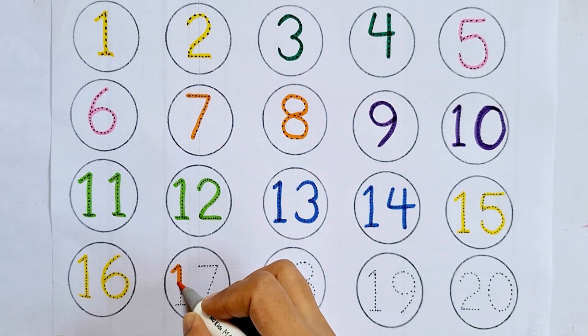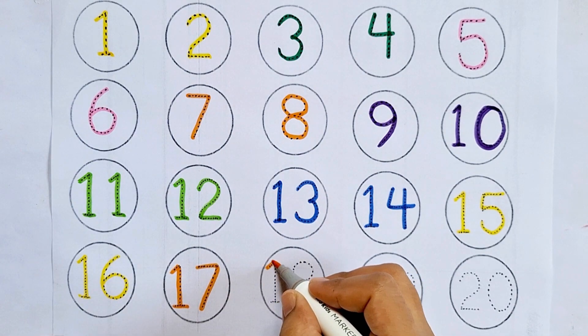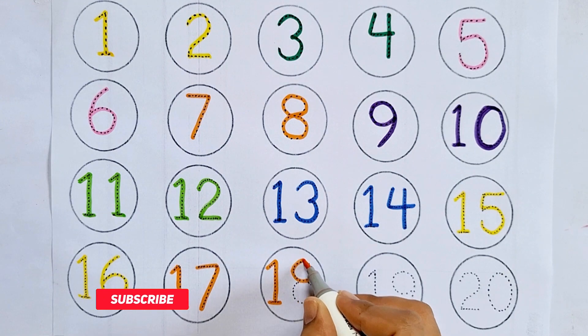Seventeen, this is seventeen. One, seven, seventeen. Eighteen, this is eighteen. One, eight, eighteen.